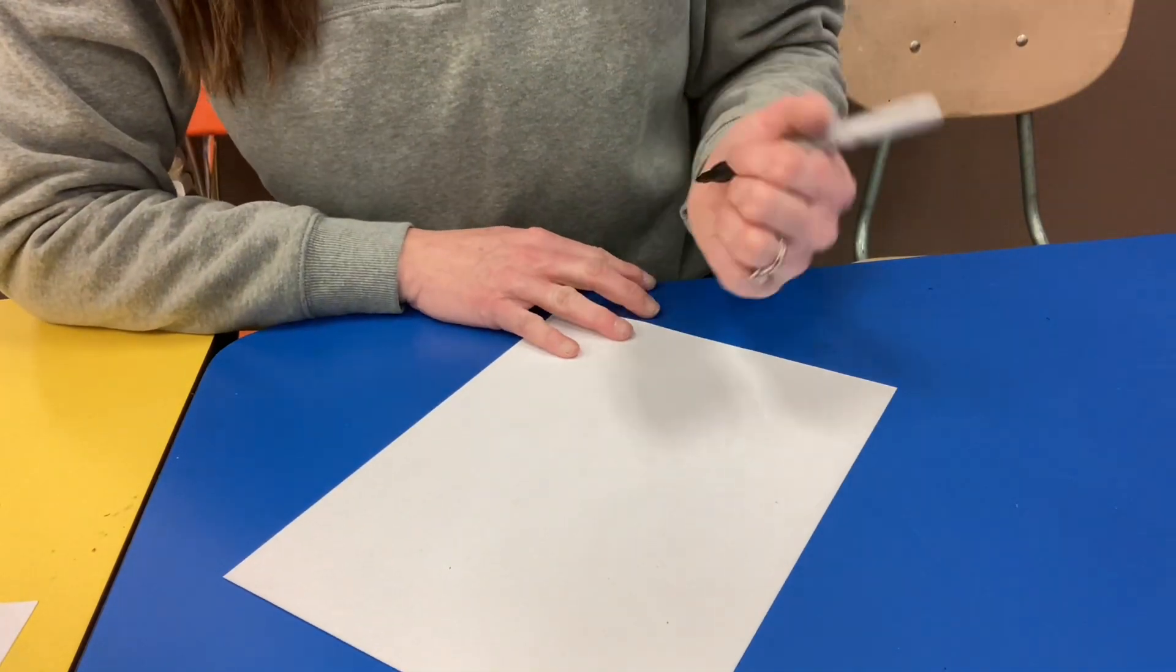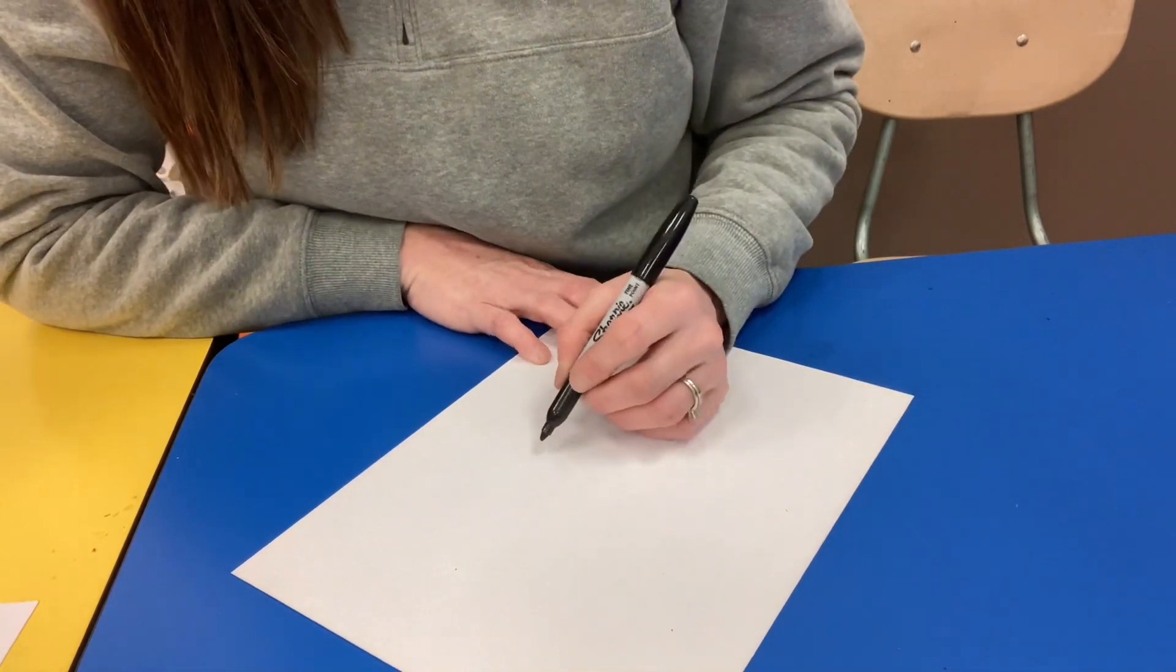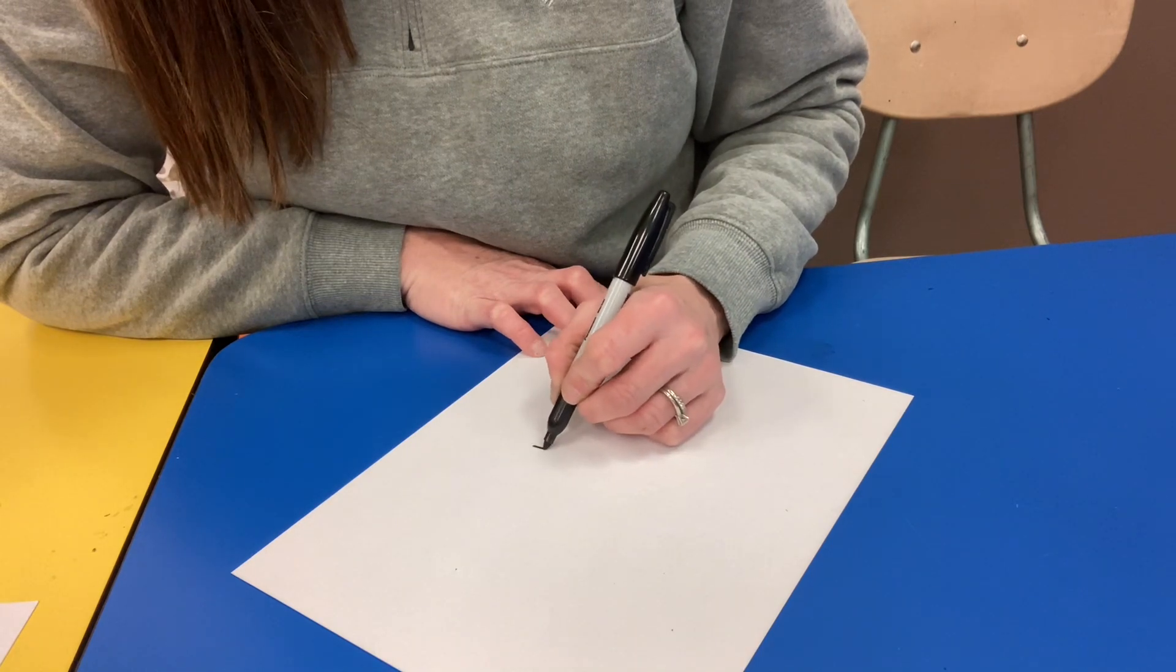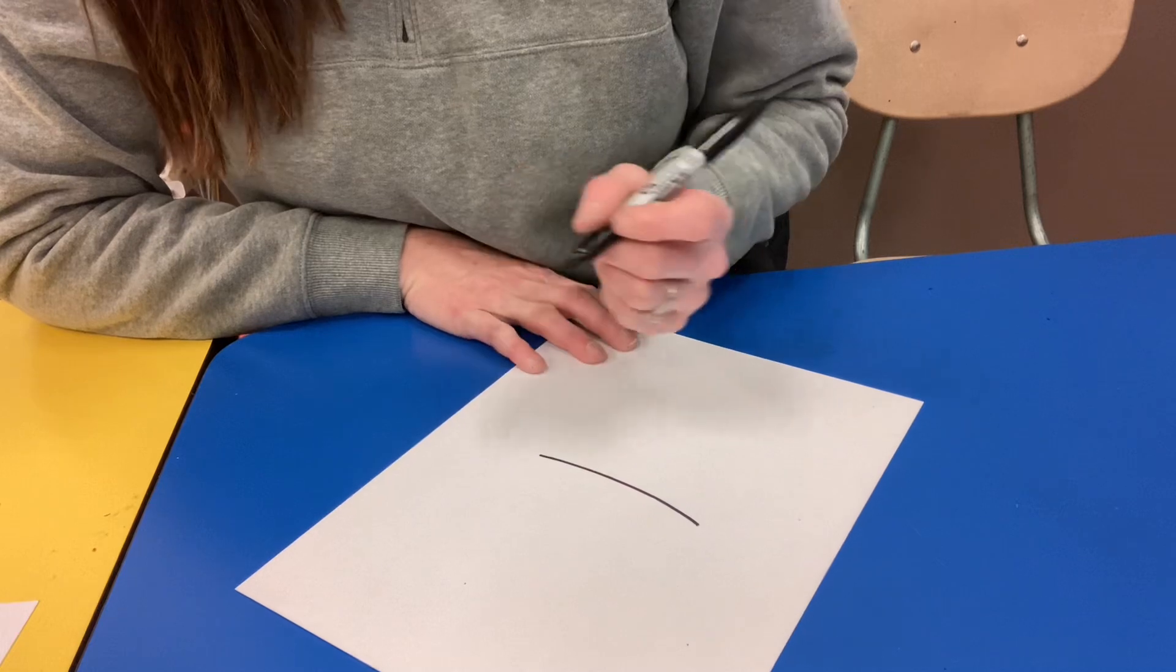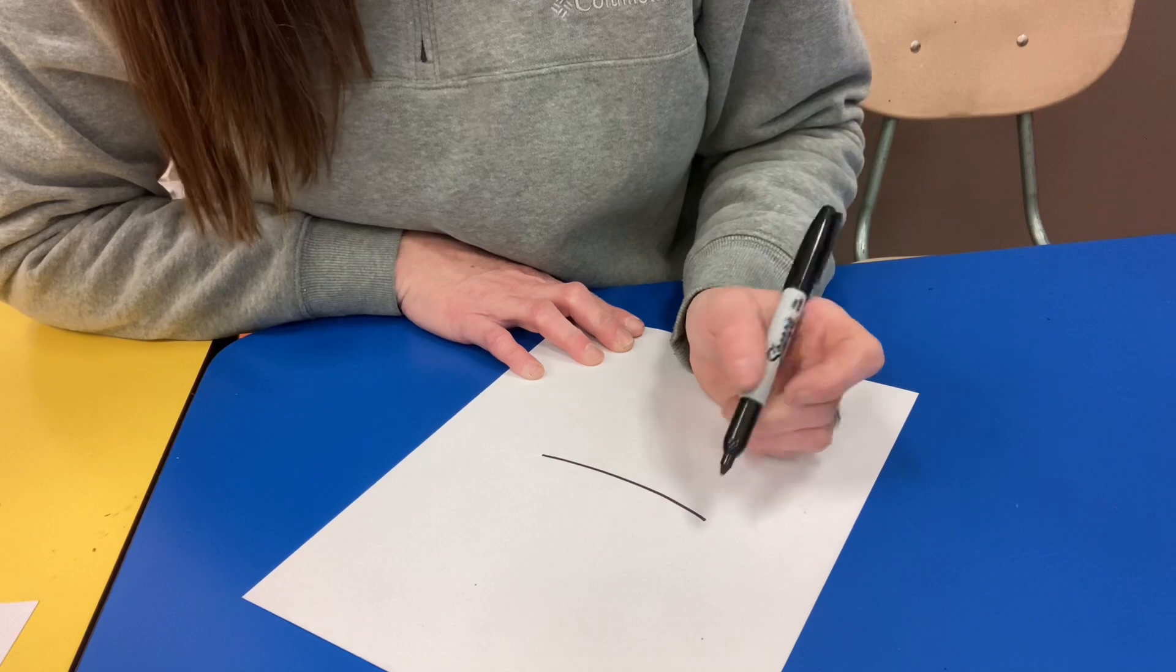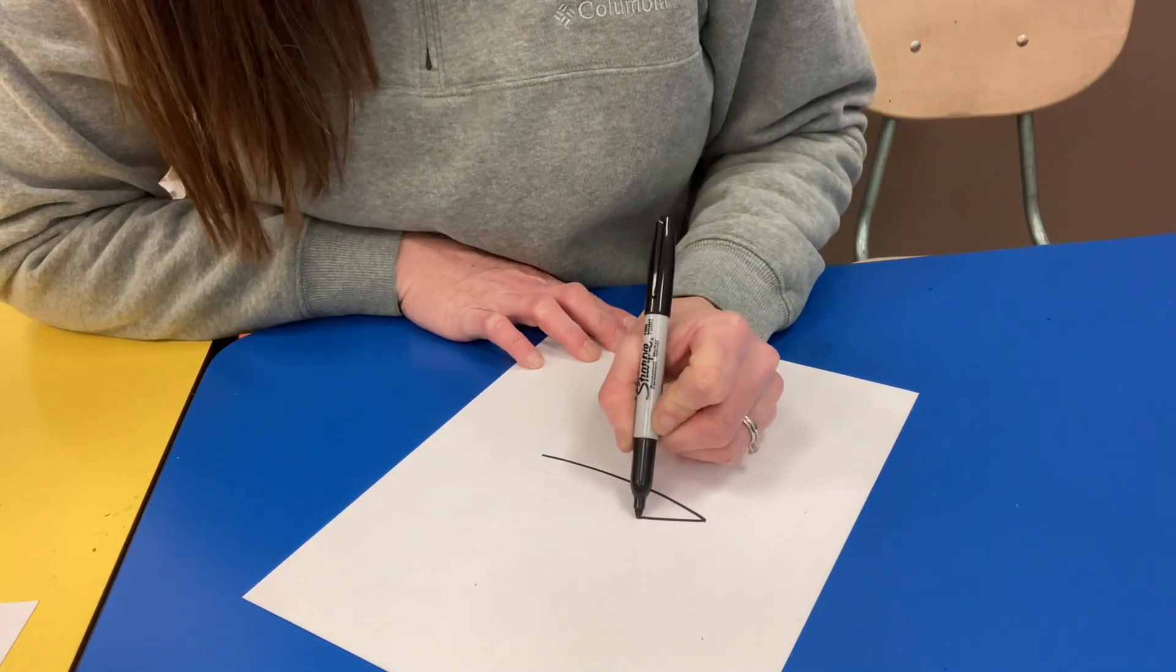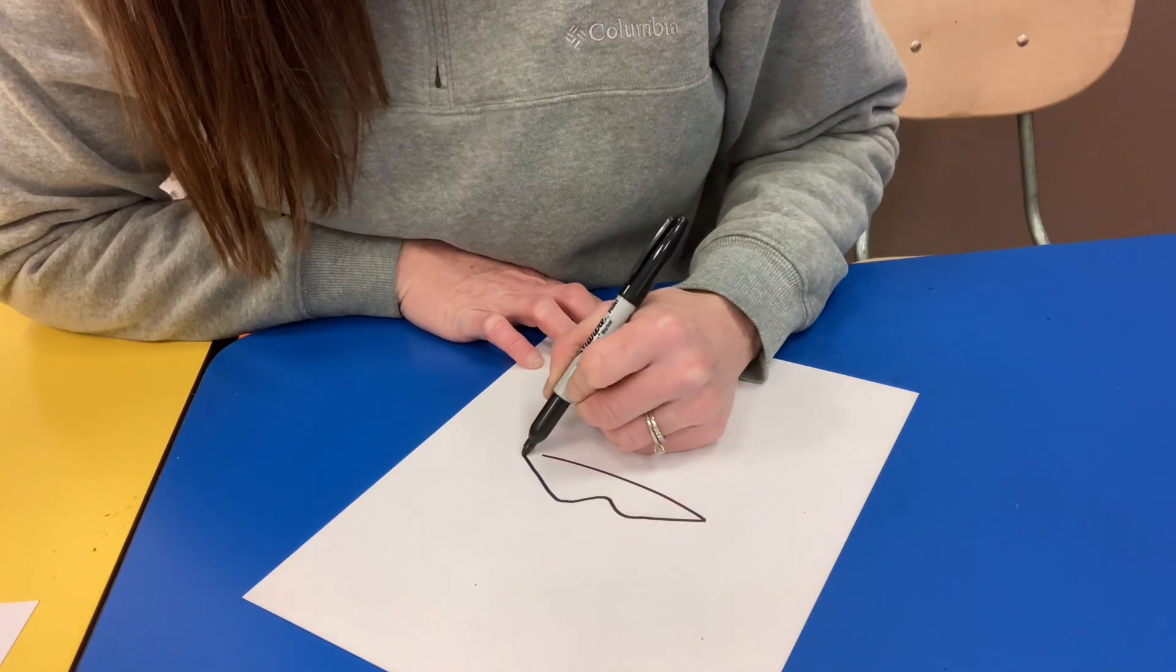The first thing we're going to do is draw the top lip. We're going to draw a line like this. Then, this is the tricky part, you're going to make a curve. Come down, up, come down, and curve.